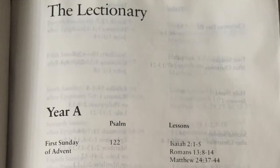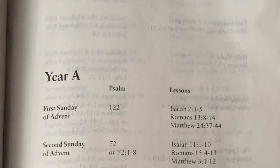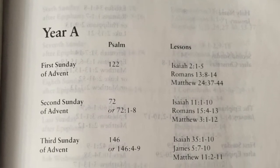The Sunday lectionary works the same way, but readings are only appointed for Sundays and feast days, and it is a three-year cycle — years A, B, and C. The Sunday lectionary in the back of the Book of Common Prayer is now out of date. The Episcopal Church currently uses the very similar Revised Common Lectionary for Sundays, which is a lectionary shared among many Christian traditions.